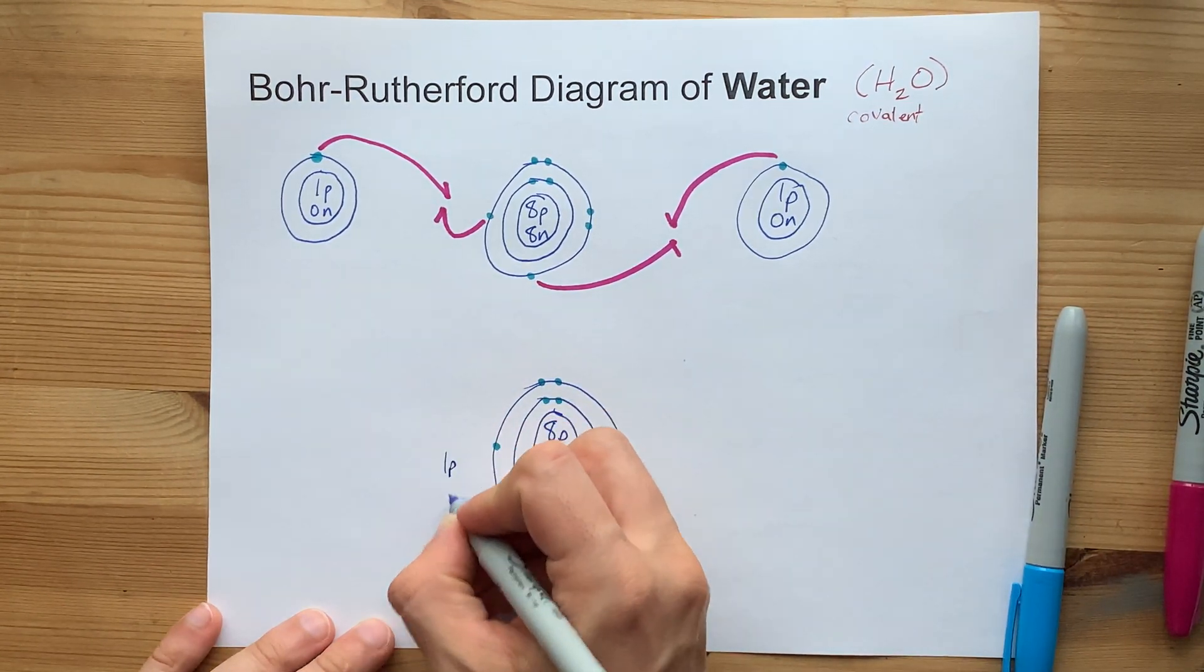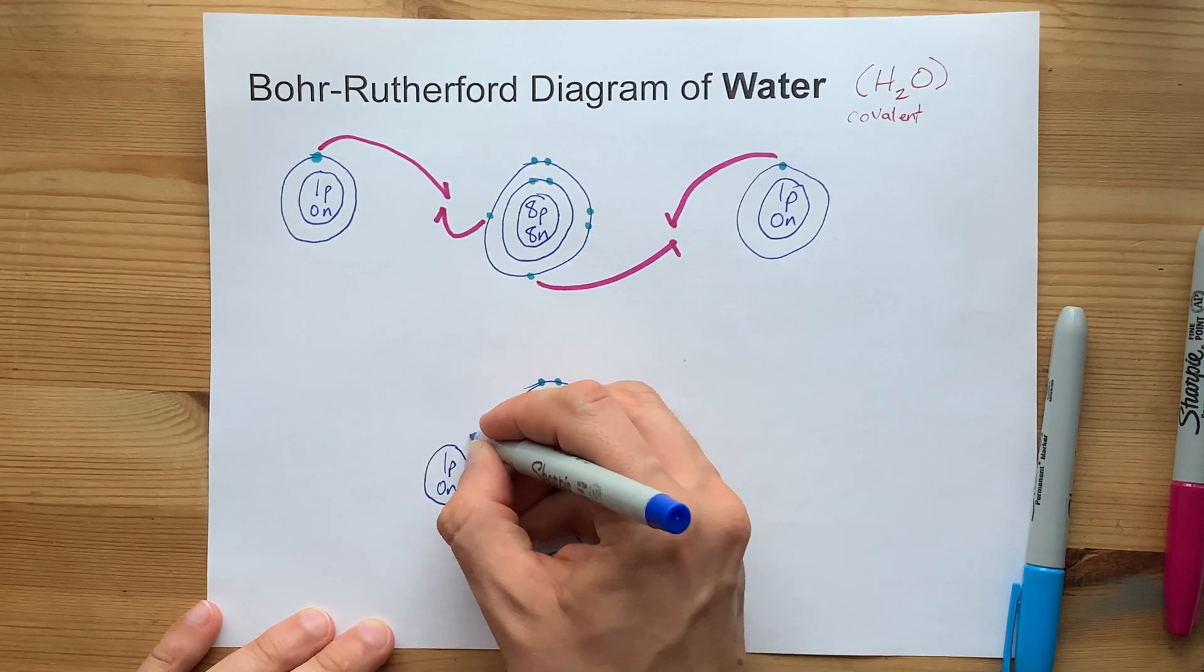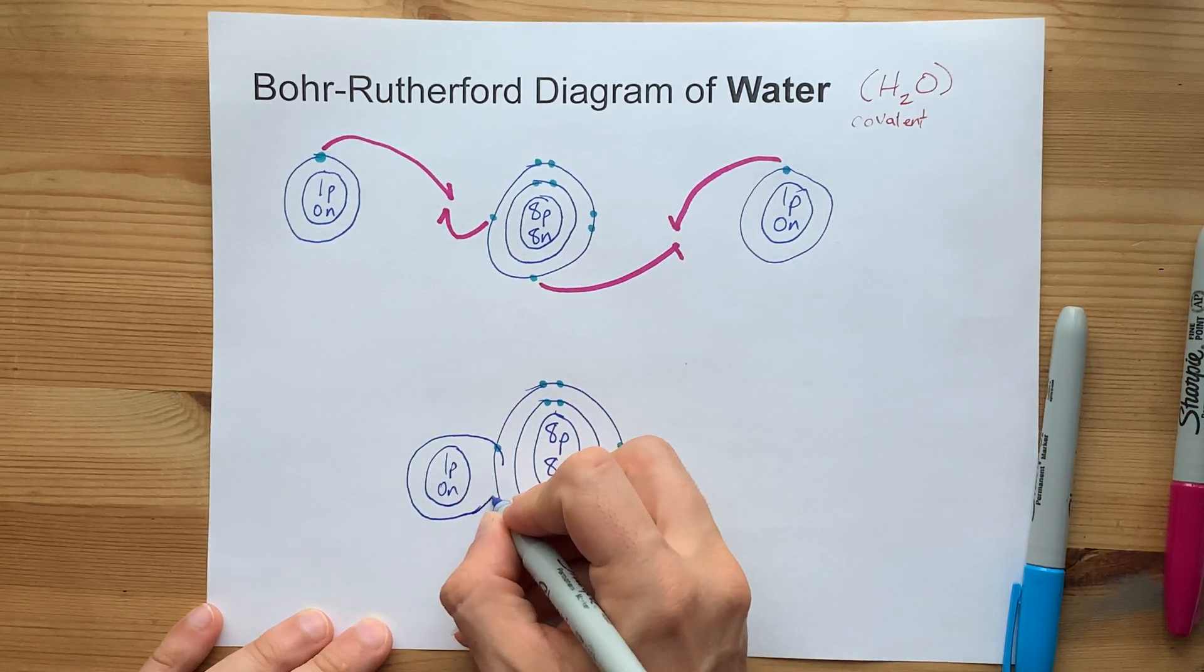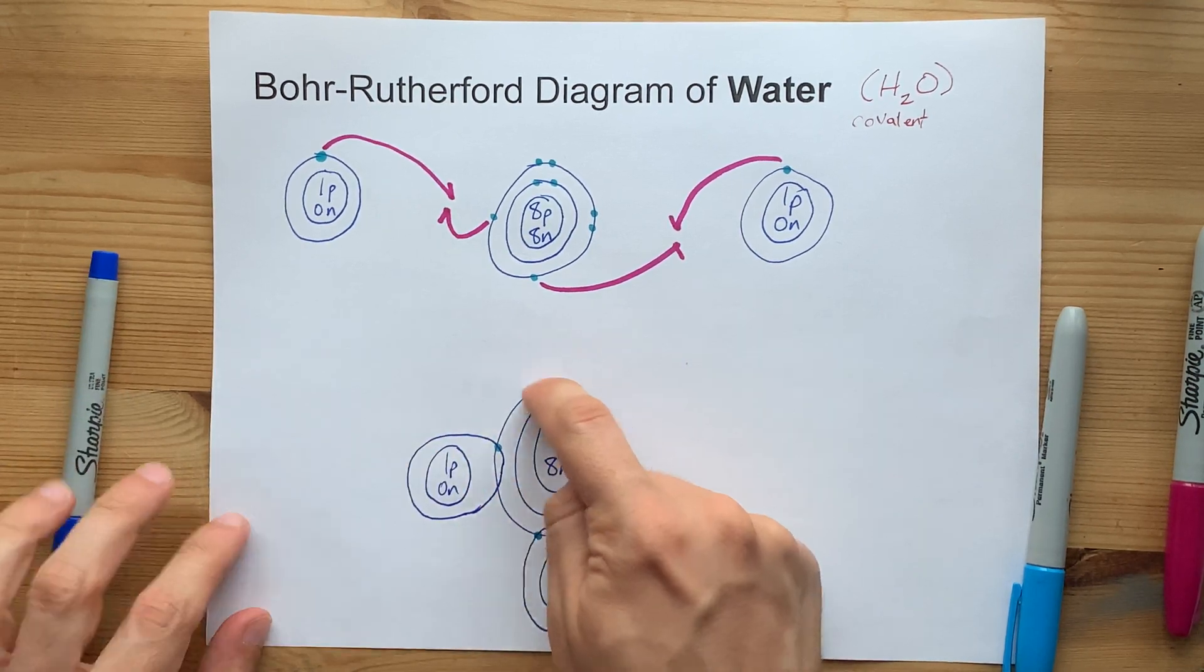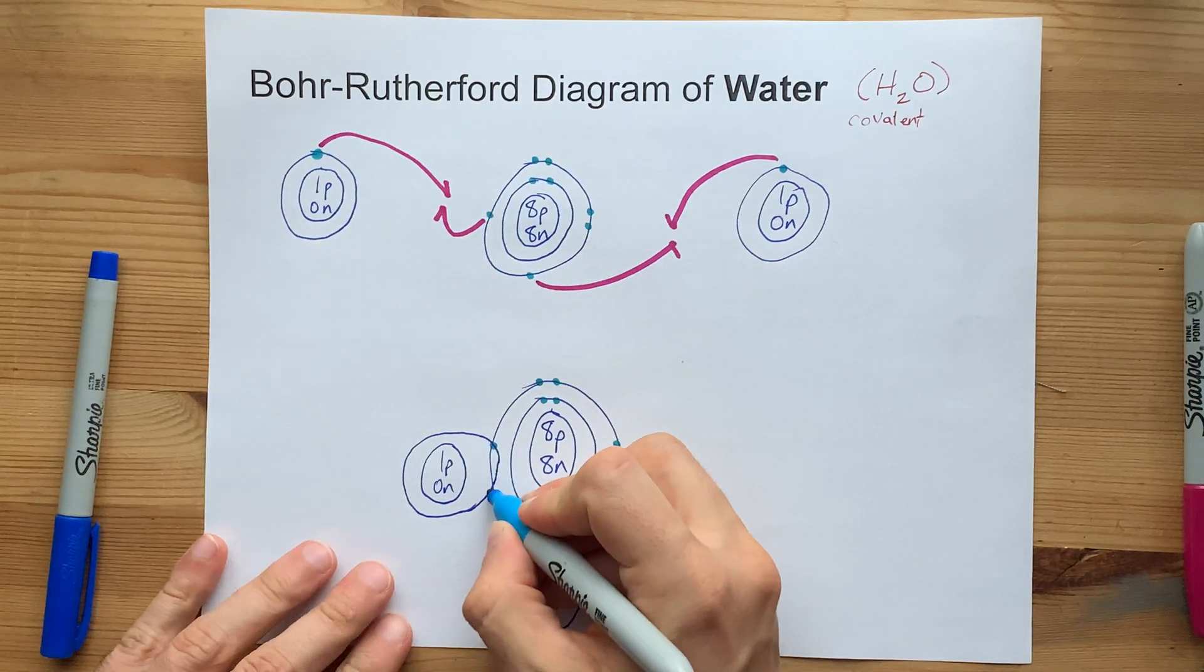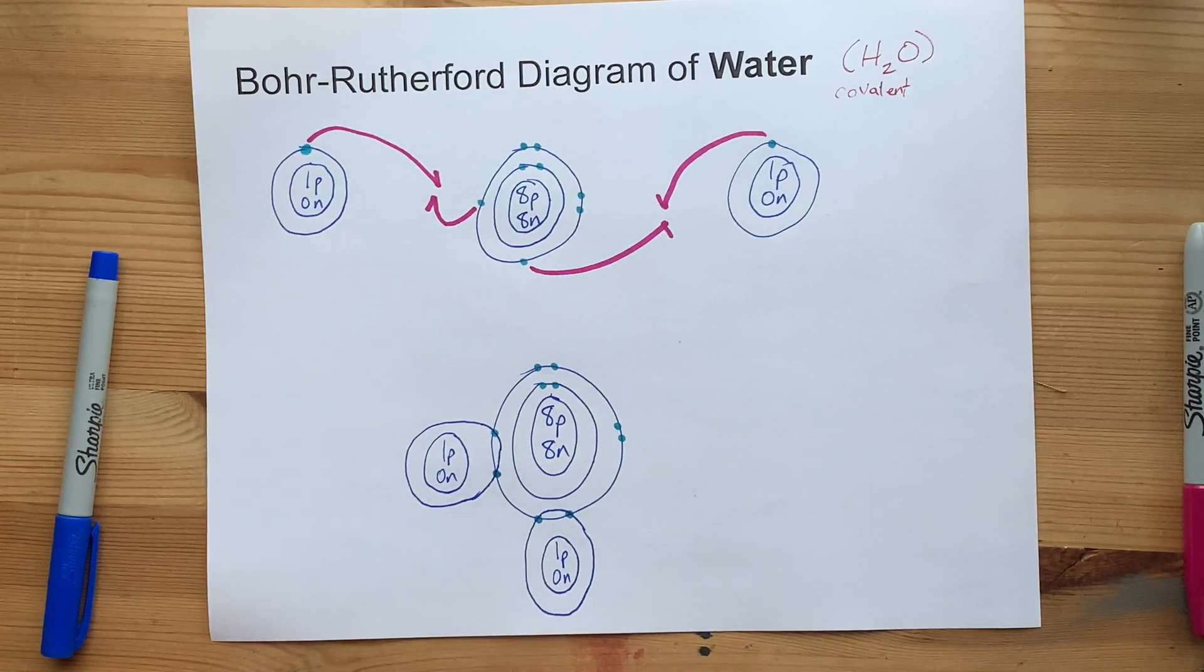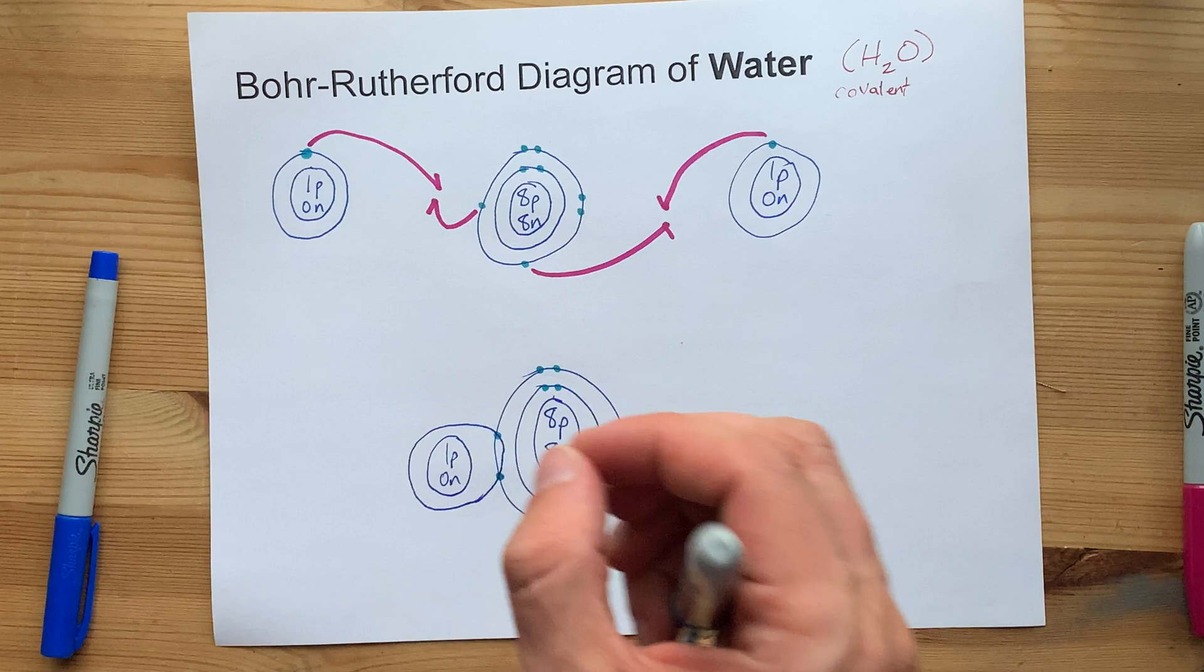I'm going to do the same thing here. One proton, zero neutrons, that's the nucleus. The first shell will go through that one electron that is shared, and the other place where this outer shell intersects this outer shell will have the extra electron that hydrogen has brought. This is my Bohr-Rutherford diagram for water, showing that the electrons between hydrogen and oxygen are shared.